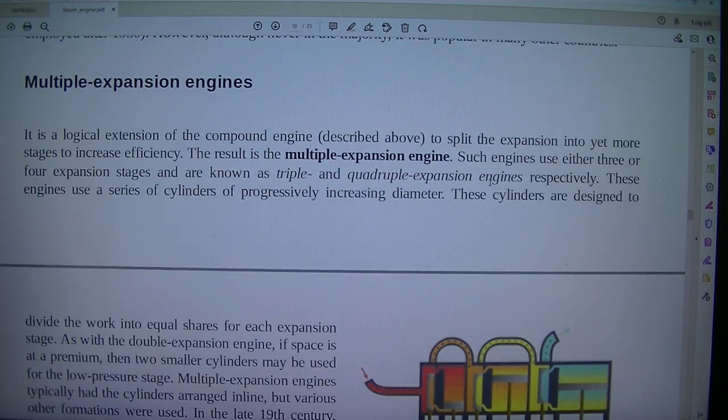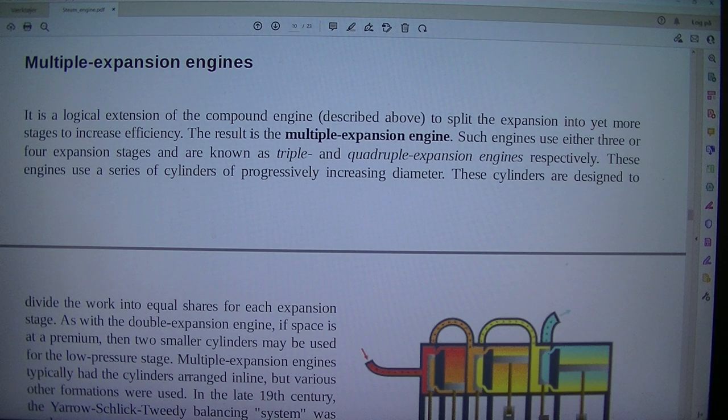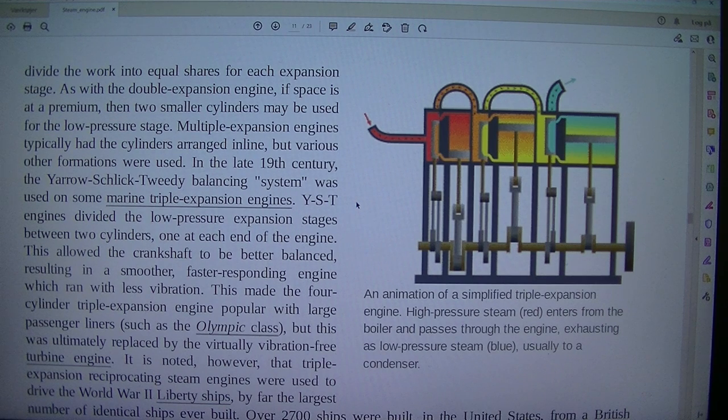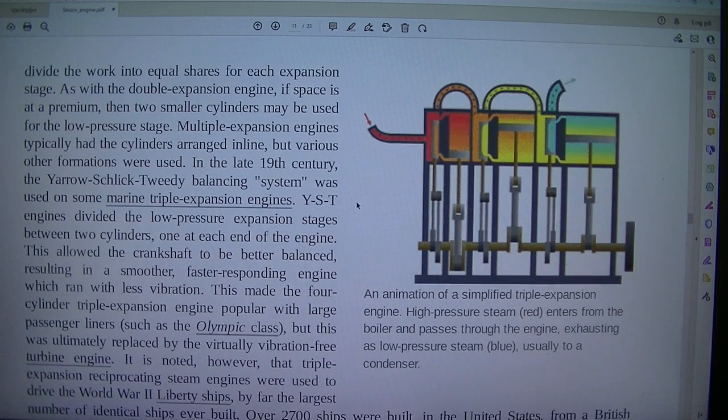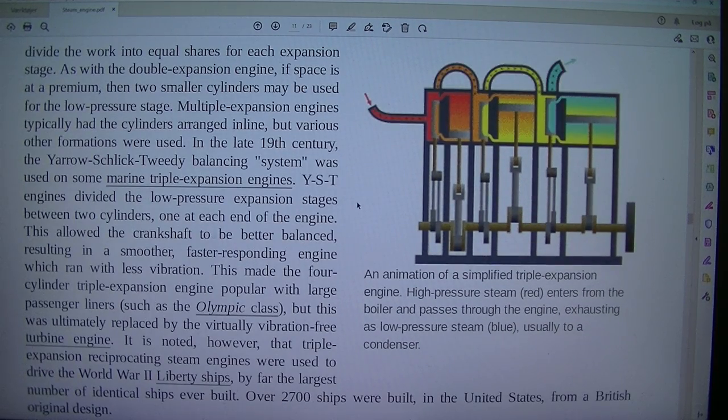Multiple expansion engines. It is a logical extension of the compound engine, described above, to split the expansion into yet more stages to increase efficiency. The result is the multiple expansion engine. Such engines use either three or four expansion stages and are known as triple and quadruple expansion engines respectively. These engines use a series of cylinders of progressively increasing diameter. These cylinders are designed to divide the work into equal shares for each expansion stage.